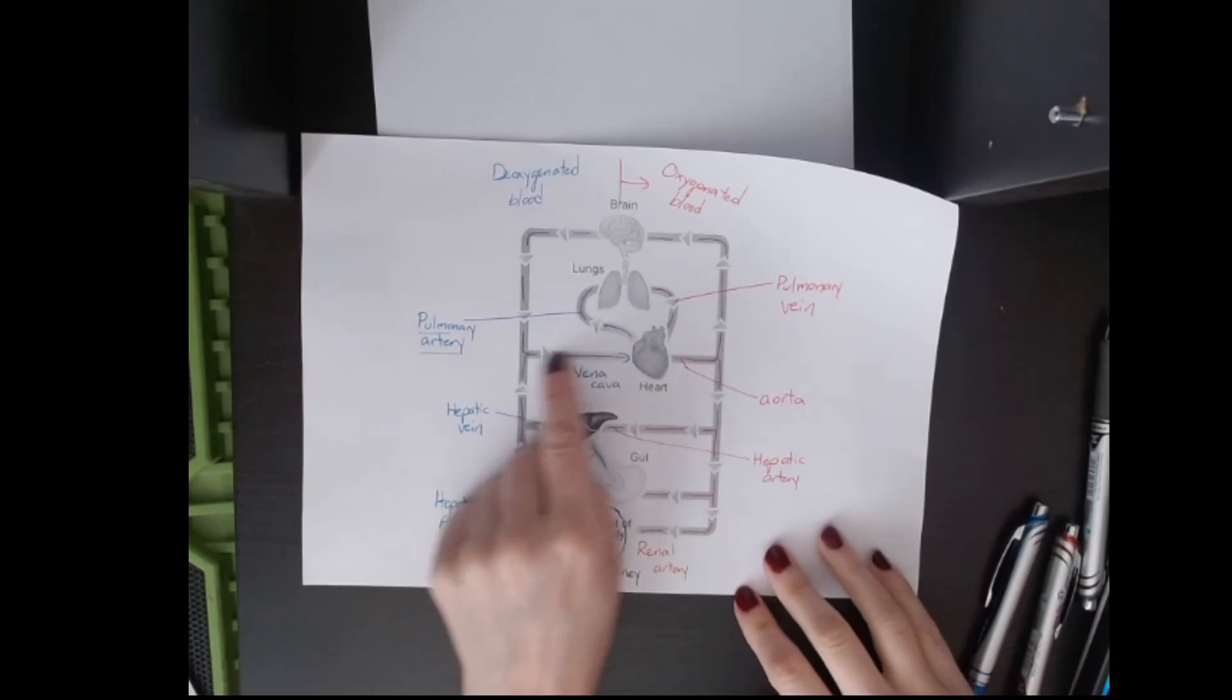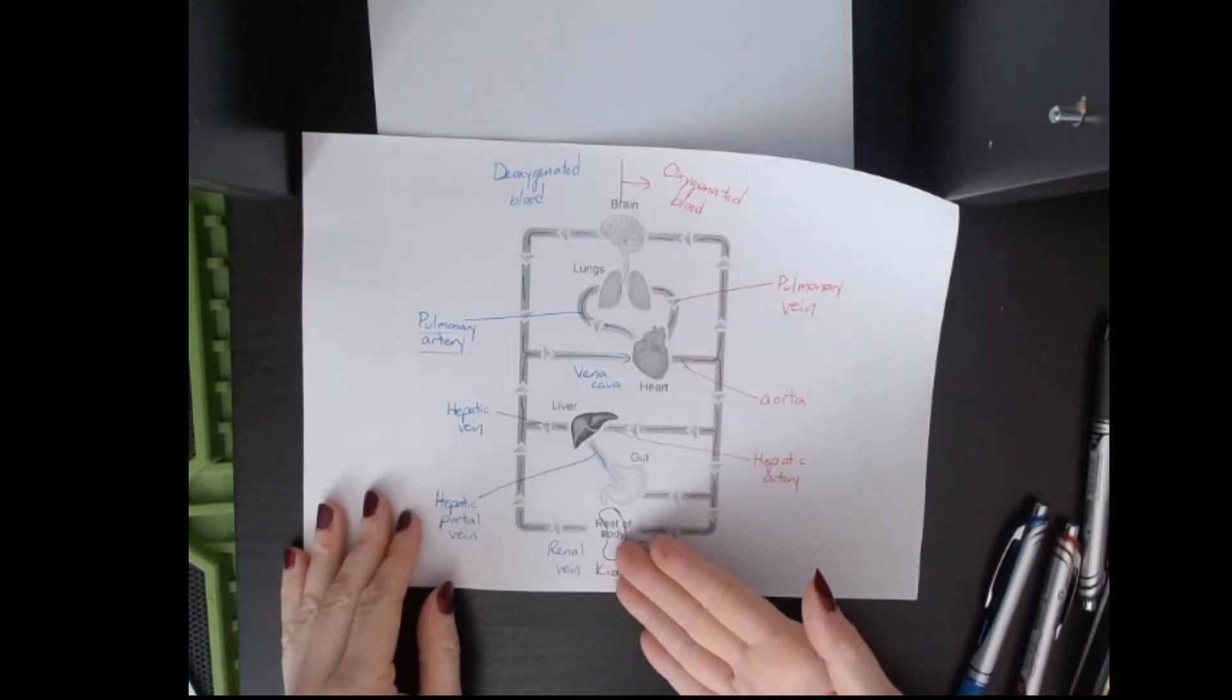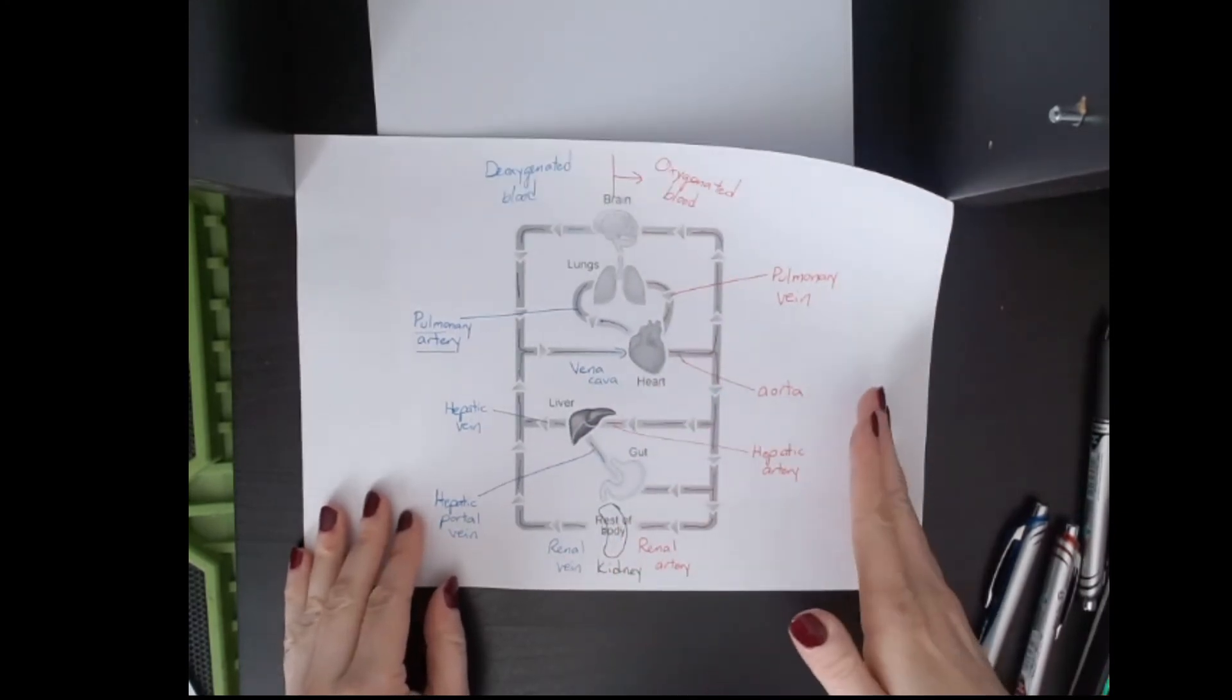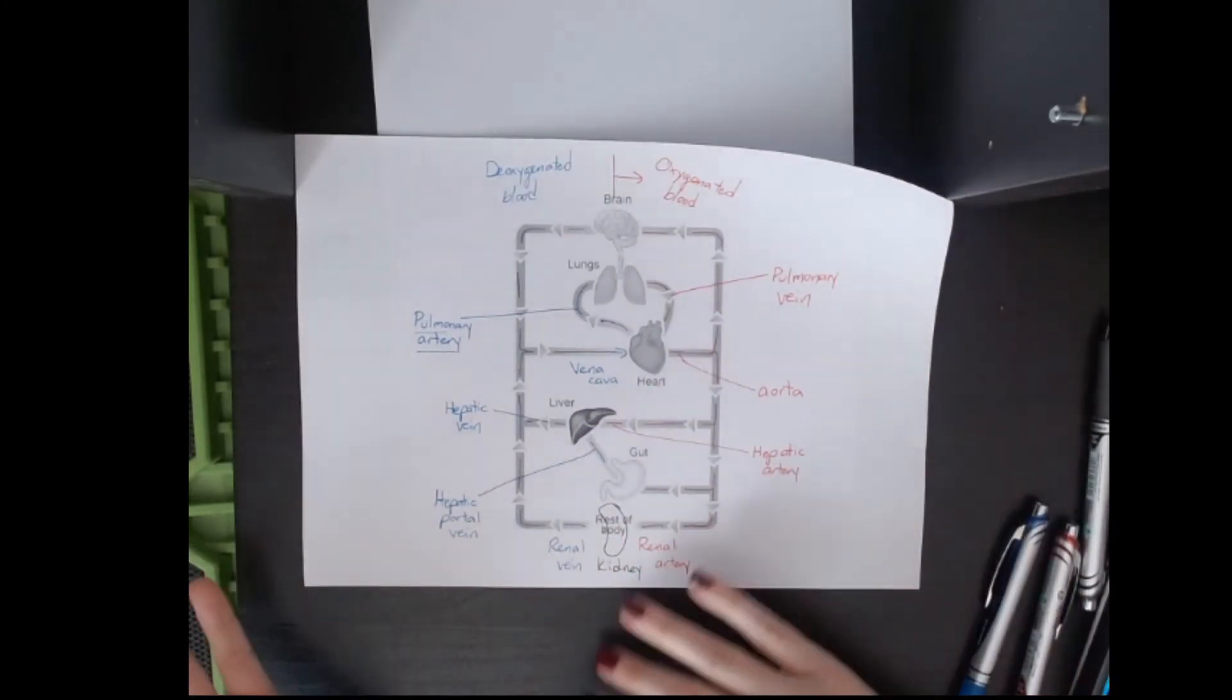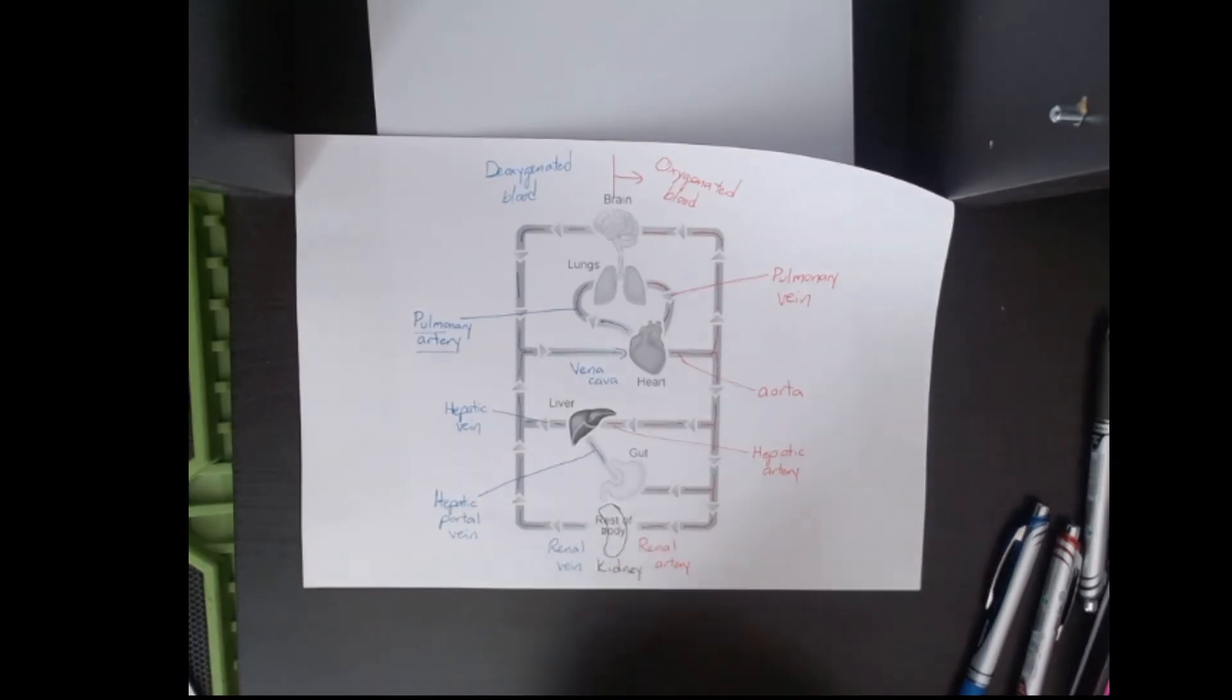The vena cava is the vein coming back to the heart. It's right before it gets pumped out again, so this is going to have a really low blood pressure. So it's things like that you want to make sure you can do, not just know their names, but also understand what is happening in these parts of the body. Is it going to be high blood pressure, low in glucose, high in glucose, like all these things?